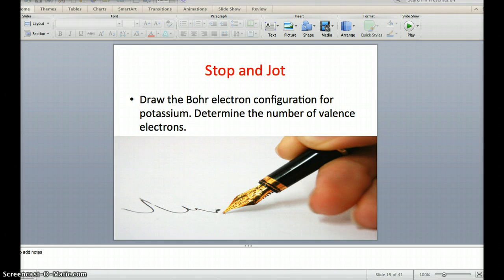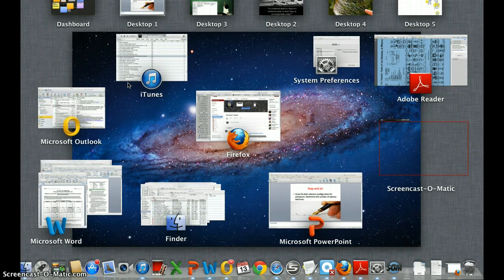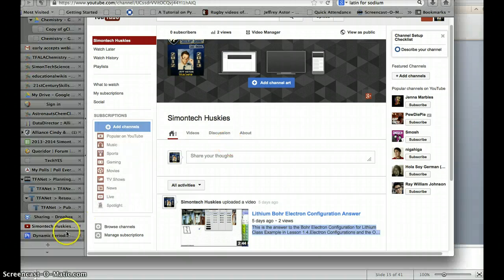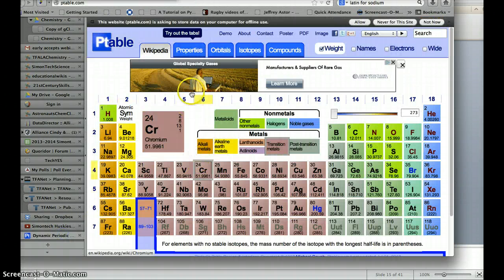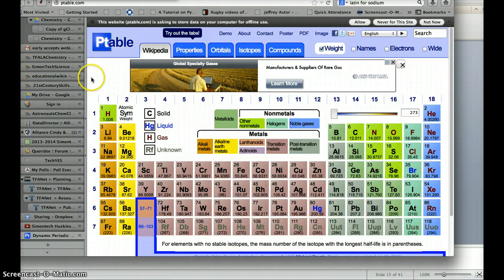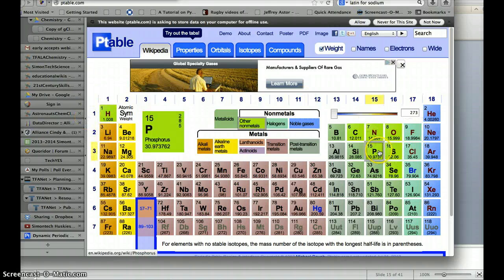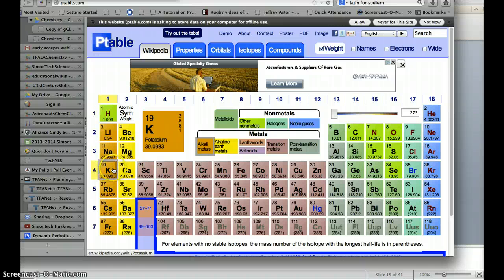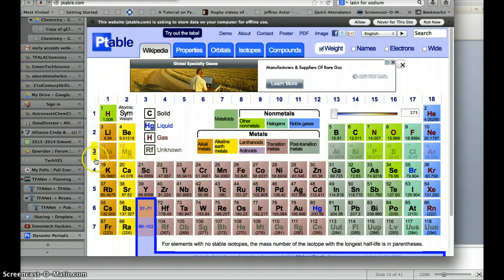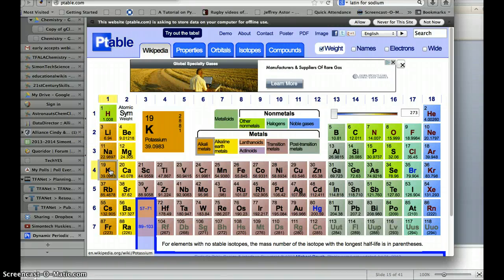As always, we'll start with our handy-dandy periodic table. I'll go right to ptable.com, and we're looking for potassium. Potassium is another one of those funky ones that doesn't actually start with P. P over here is phosphorus. Potassium is K, right below sodium. Here, we see that potassium has an atomic number of 19 and a mass number of 39.